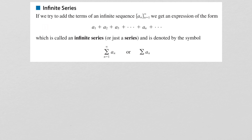For example, if we looked at the sum n equals 1 to infinity of n, this would simply be 1 plus 2 plus 3 plus 4 plus 5 indefinitely. And this would very clearly add up to infinity, as we are just adding larger and larger numbers.